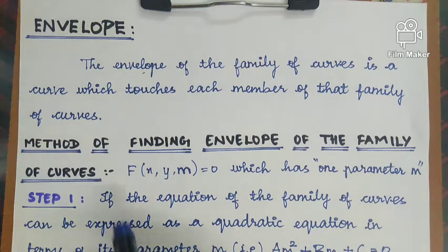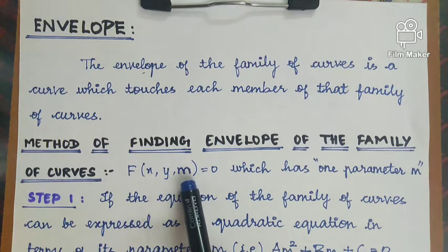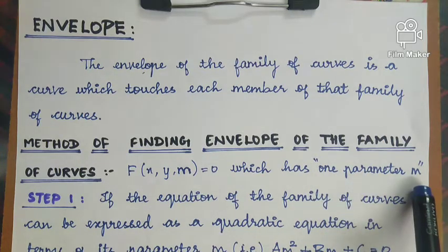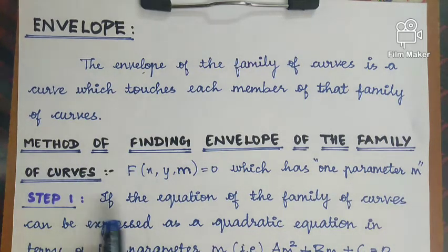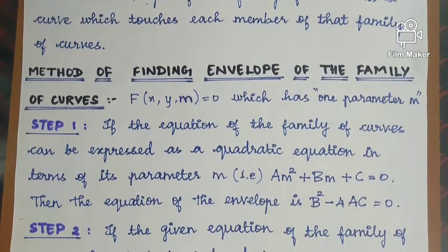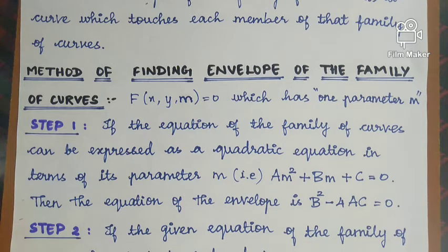Let's take a question. The family of curves is f(x, y, m) = 0, where m is a parameter. The first step is to express the equation of the family of curves as a quadratic equation in terms of its parameter m: am² + bm + c = 0.